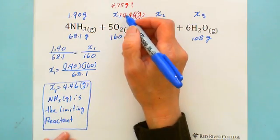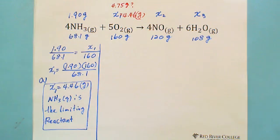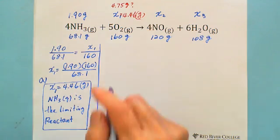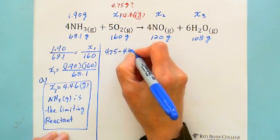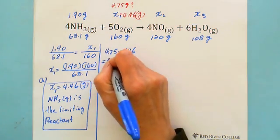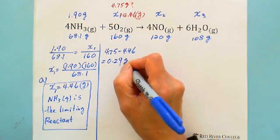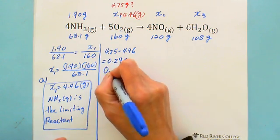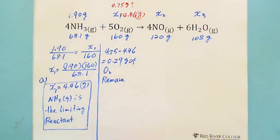That answers question A: NH3 is the limiting reactant, and O2 is the excess reactant. For question B — how many grams of excess reactant remain — we calculate 4.75 subtract 4.46, which gives 0.29 grams of oxygen gas remaining.